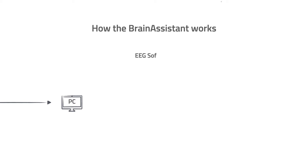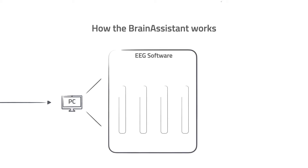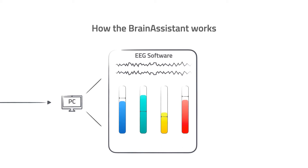Now let's talk about how the Brain Assistant works — but first, your EEG software. We want to keep things simple. Your client, hooked up to the EEG amplifier, has their signal read via the EEG software that comes with the amplifier. In that software — Brain Avatar or BioTrace — you choose your protocol, set your thresholds for inhibiting and rewarding, whether auto or manual. Nothing new to learn; you still use the same software.